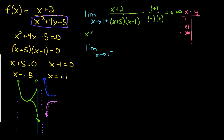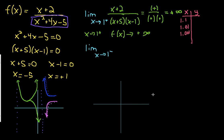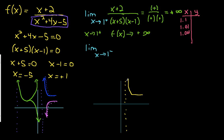Another way of stating this: as x approaches 1 from the right, f(x) approaches positive infinity. So if we draw our actual graph, we can start to see it coming together. Typically you'll also find horizontal asymptotes and intercepts, but since we're focusing on vertical asymptotes, we can show that as x approaches 1 from the right, the function goes toward positive infinity.